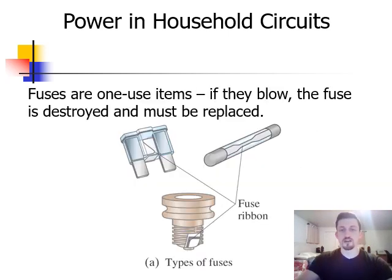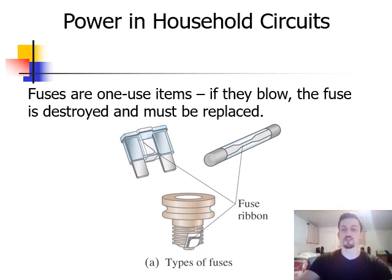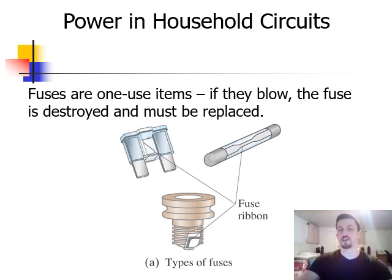If we look at this slide, we can see a couple of examples of fuses. The common thing between these three styles of fuses is that they all have a fuse ribbon in them. Basically, a fuse ribbon is something that when the temperature begins to rise, the fuse ribbon will break or the fuse will blow. And once that happens, you're no longer going to have a complete circuit, so current will no longer flow. This will cause the temperature to stop rising and prevent you from reaching the point where fire is possible. This does make fuses one-use items though — if your fuse blows, the fuse is destroyed and you need to replace it.